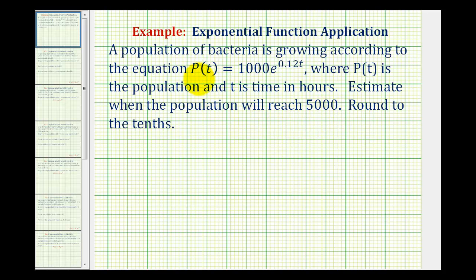Well, P(t) represents the population, so we want to set P(t) equal to 5,000 and then solve the exponential equation for t. So we want to solve the equation 5,000 = 1000e^(0.12t).